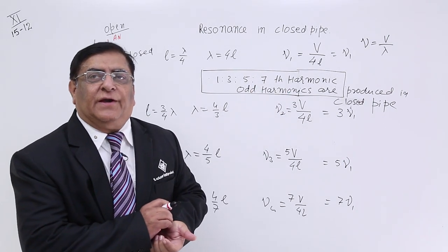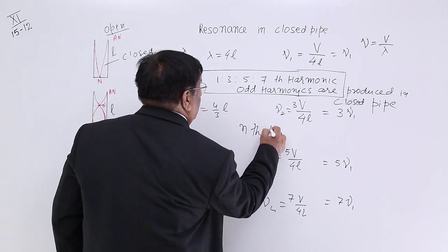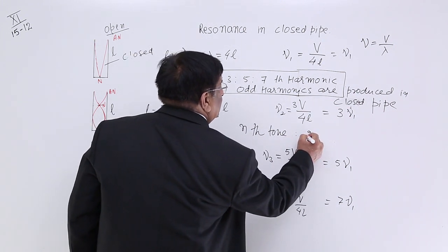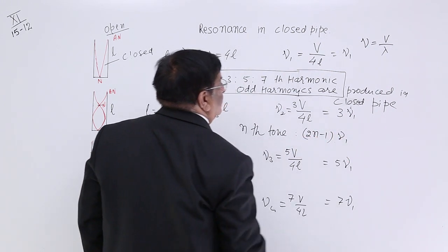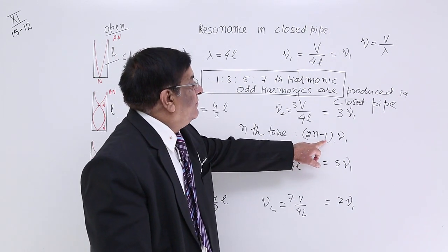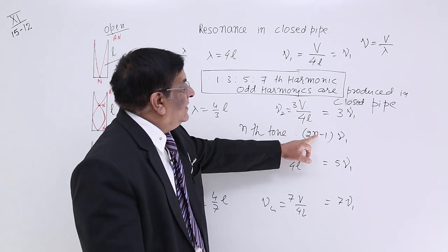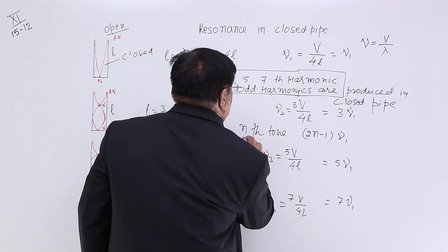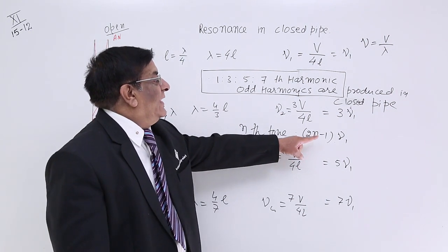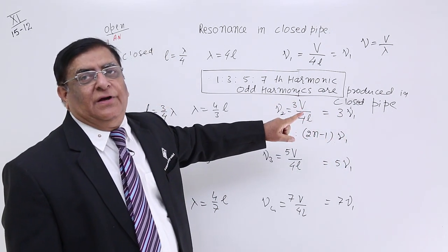And here if we want to find out what is the nth tone, what should we write here? We should write here 2n minus 1 of ν₁. If it is first, write here 1. This will be 1. Second, write here 2. This will be 3. Third, write here 3. So this gives us nth tone. If I ask you what is the fifth tone frequency? You write here 5. That is 9 of the 9th harmonic of the fundamental tone.